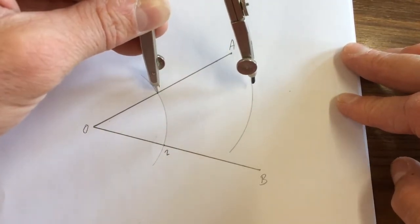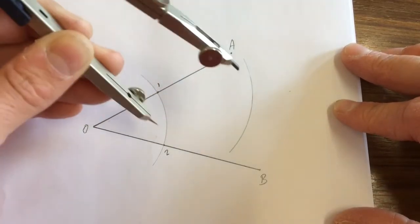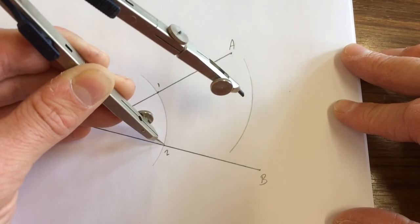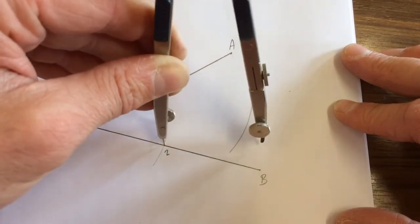Now this is important: whatever radius you have it set at now, you must keep it at that radius but transfer the point to point number two and then swing an arc the other way.